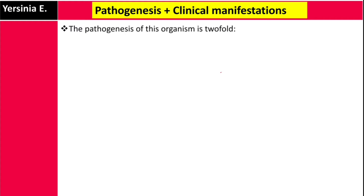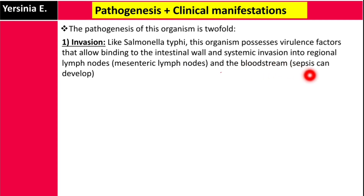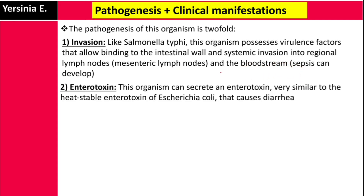The pathogenesis of Yersinia enterocolitica is twofold. The first part is invasion: like Salmonella typhi, this organism possesses virulence factors that allow binding to the intestinal wall and systemic invasion into the regional lymph nodes — such as mesenteric lymph nodes — or into the bloodstream, causing sepsis. The second part is the production of an enterotoxin very similar to the heat-stable enterotoxin of E. coli, which causes diarrhea.